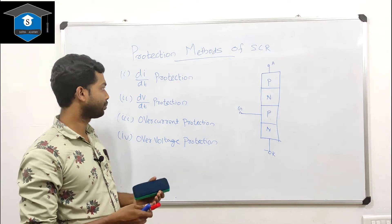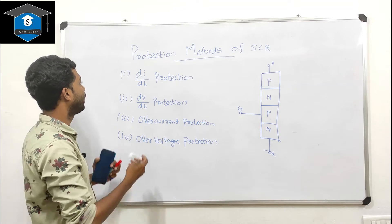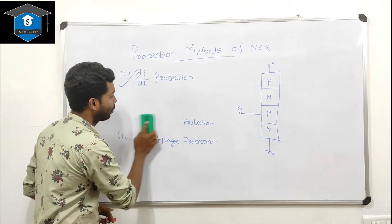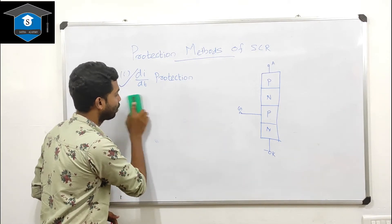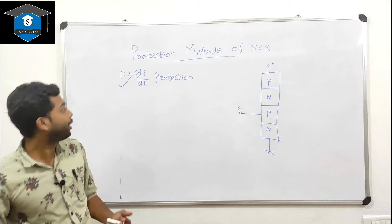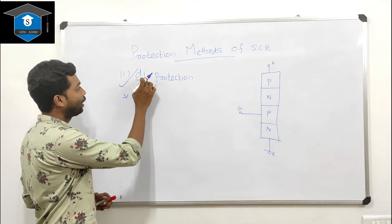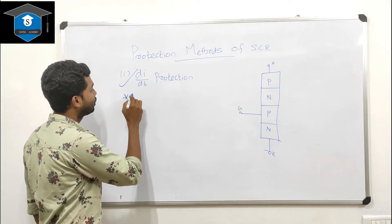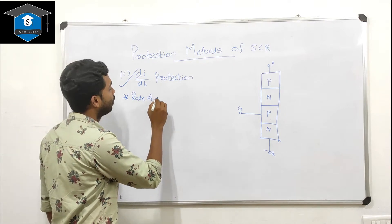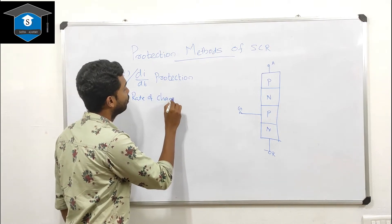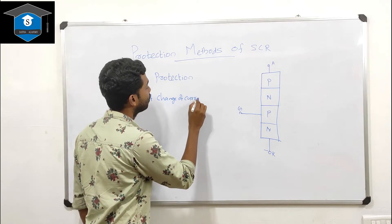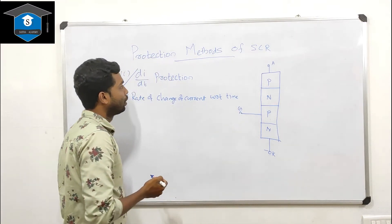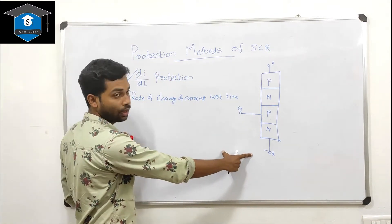First, di/dt protection. di/dt means the rate of change of current with respect to time — that is, the rate of change of current with respect to time.